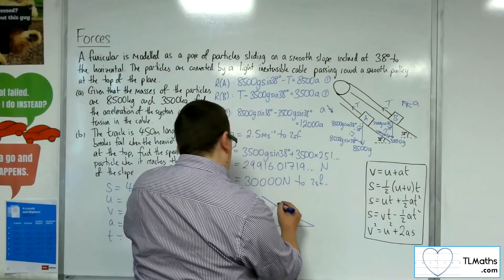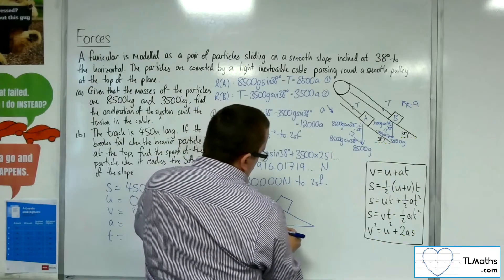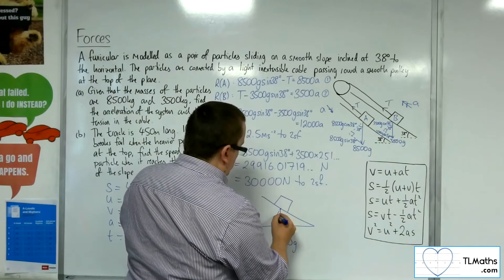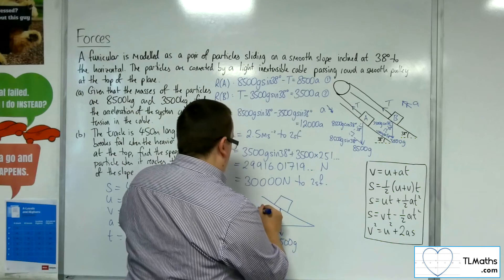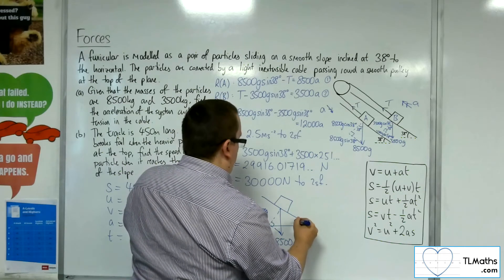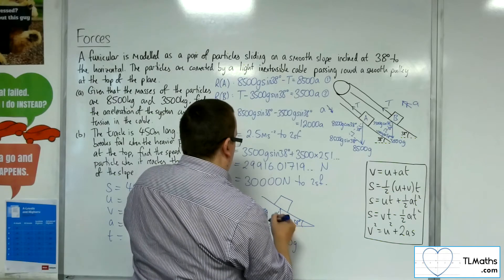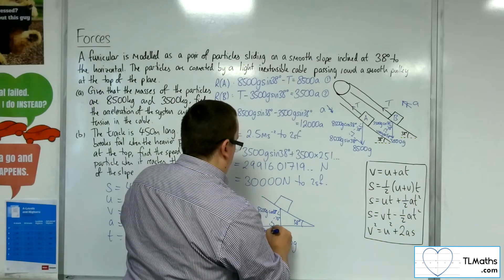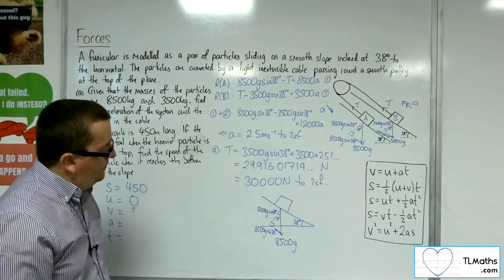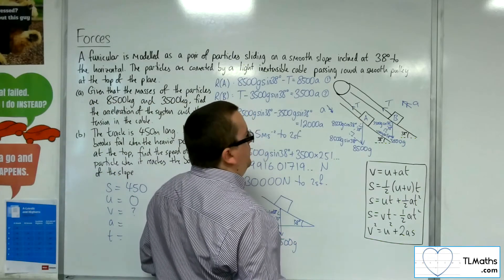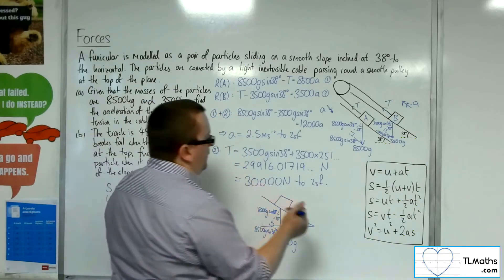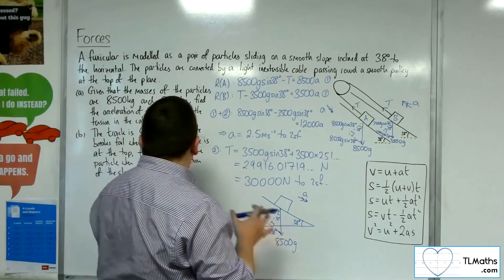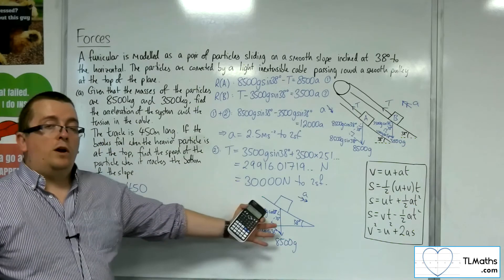Here's my slope with particle A. Its weight acts downwards — 8,500G — giving components 8,500G cosine 38 perpendicular and 8,500G sine 38 parallel to the slope. With the tension gone, all I have is the weight pulling it downwards, and I'm accelerating down the slope. So I need to work out this new acceleration before I can use the SUVAT equations.